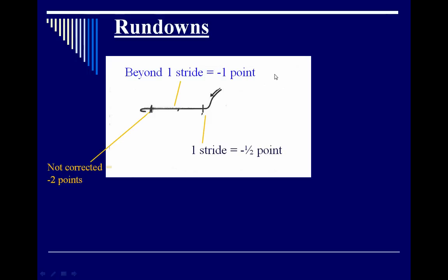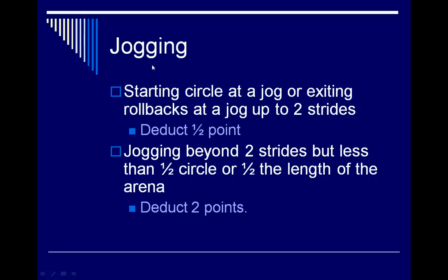On a pattern where a horse comes around in a circle and is supposed to go down the center with a flying change, the one-stride rule applies. If he's past the one stride, it's a one-point penalty. If he's beyond one stride on the straightaway and never corrects to the required lead, it becomes a two-point penalty.